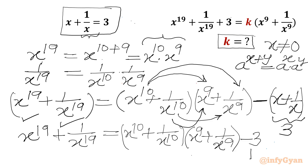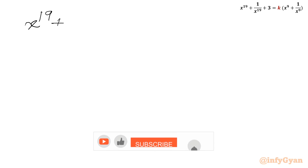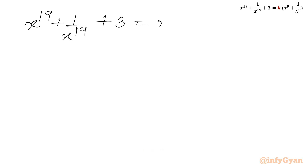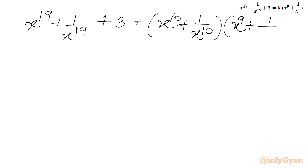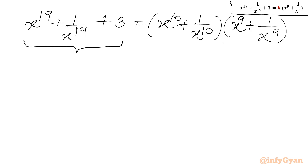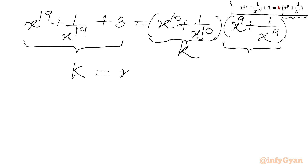Now I will take this minus 3 to the left-hand side. So we get x power 19 plus 1 over x power 19 plus 3 on the left-hand side. Now we will compare both equations. The left-hand side is exactly the same as the given equation. On the right-hand side, the bracket (x power 9 plus 1 over x power 9) is matching, so the remaining bracket gives us k. Therefore, k equals x power 10 plus 1 over x power 10.